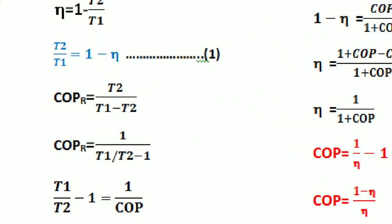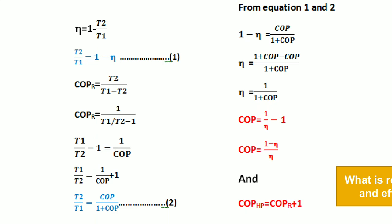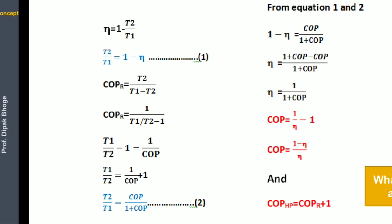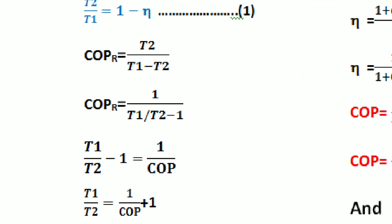Now I will compare the efficiency and COP. Here I have given a small derivation. The efficiency of the engine is 1 minus T2 upon T1. From this we can calculate T2/T1 = 1 minus efficiency — mark this as equation 1. To compare the performance of the engine and the refrigerator, we first calculate T2/T1 of both systems.